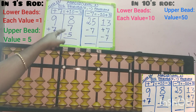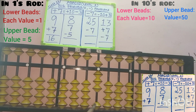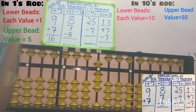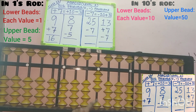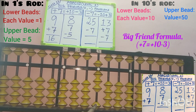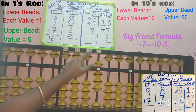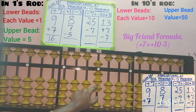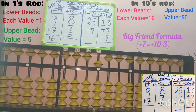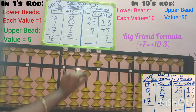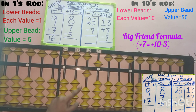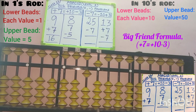Next, second row: plus 7. We have to add 7 beads in the 1s slot, as the place value of 7 is 1s. In the 1s slot, only 1 bead is available, so we cannot add 7 directly. Apply the big friend formula for adding 7 — 7's big friend is 3, since 7 plus 3 equals 10. In the question, plus symbol is there, so remove the friend of 7, that is minus 3: 1, 2, 3. While removing the friend, add the boss in the 10s place — plus 10. By doing plus 10 minus 3, 7 is added using the big friend concept.